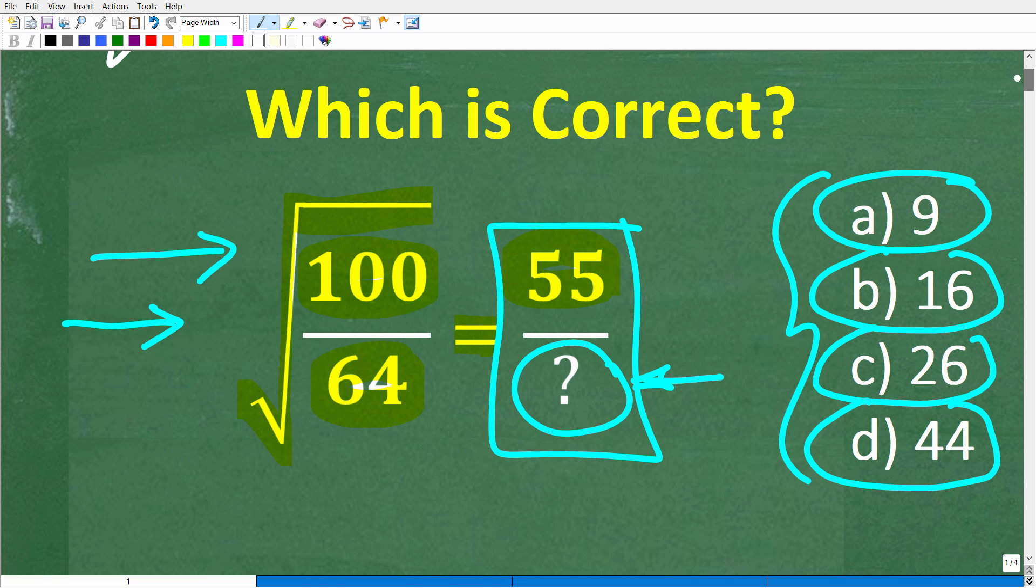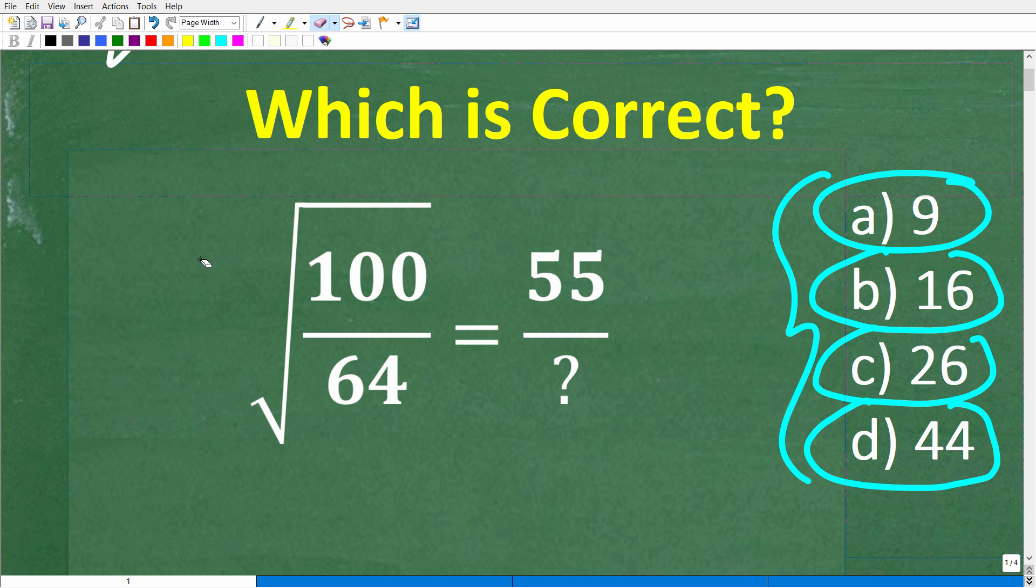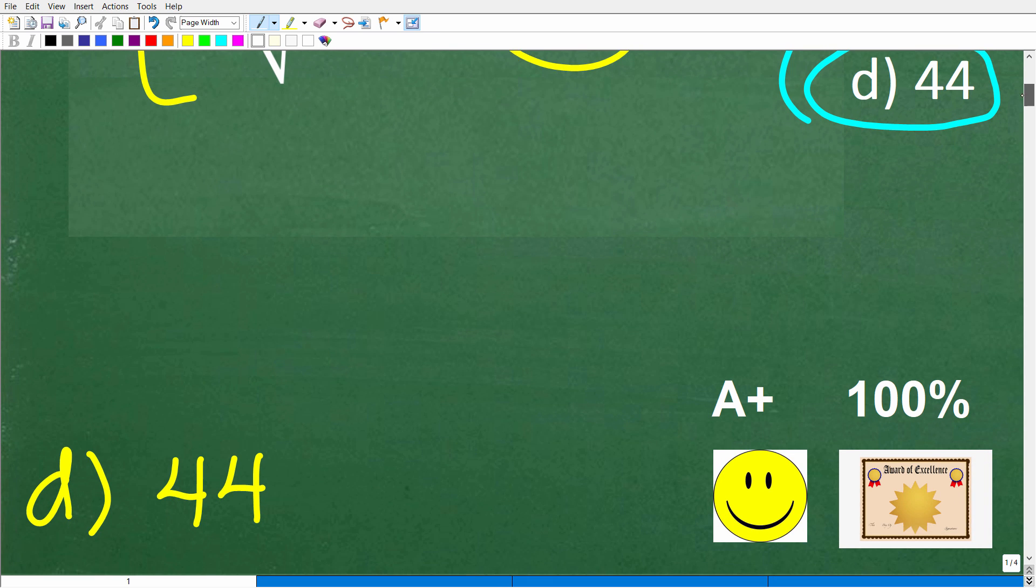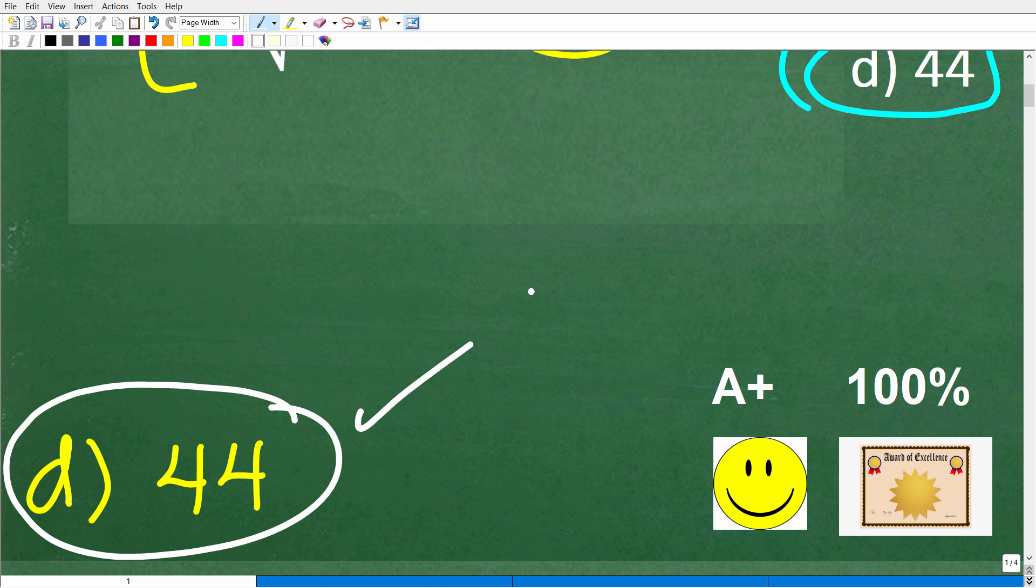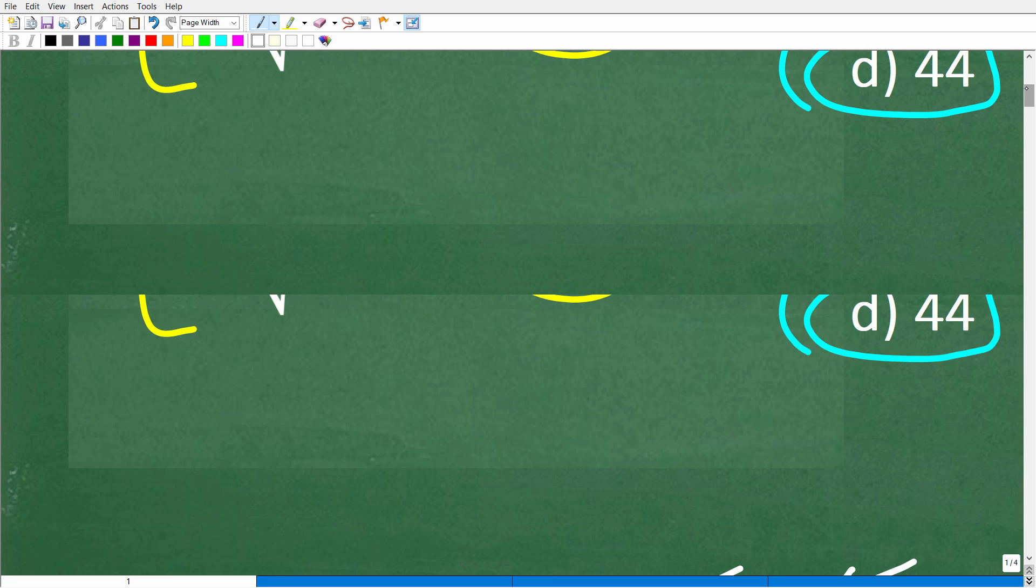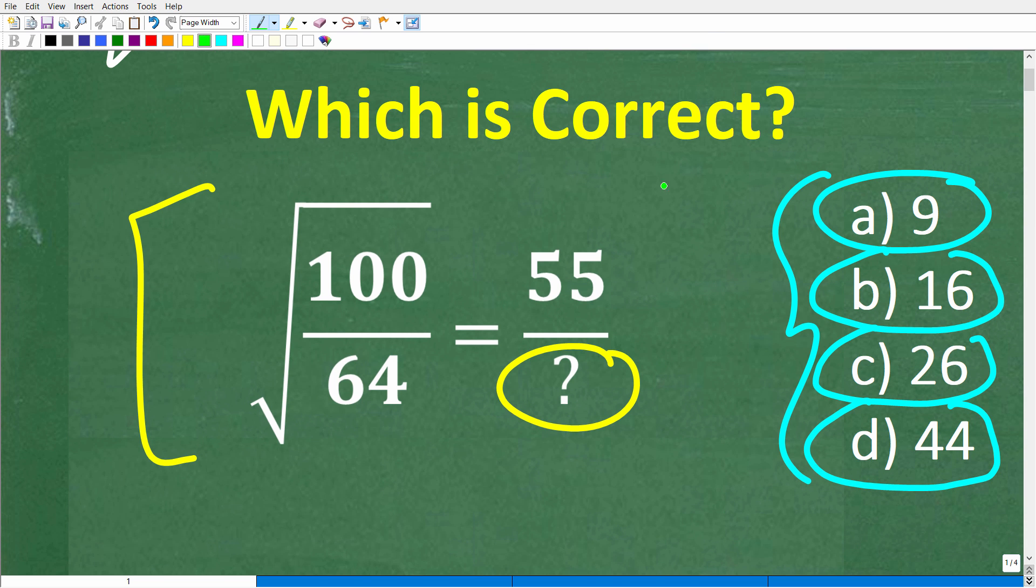All right, so here again is our problem. And you can use a calculator, but try not to use a calculator. That's the kind of best way to do these problems. So the square root of 100 over 64 is equal to 55 over what number? Let's take a look at the correct answer. So the correct answer here is D, 44.